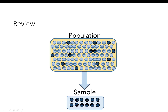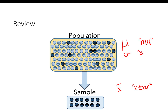For example, we'll learn about means and standard deviations in this lesson. A population mean is mu. A sample mean is x-bar. A population standard deviation is a lowercase sigma, and a sample standard deviation is a lowercase s.